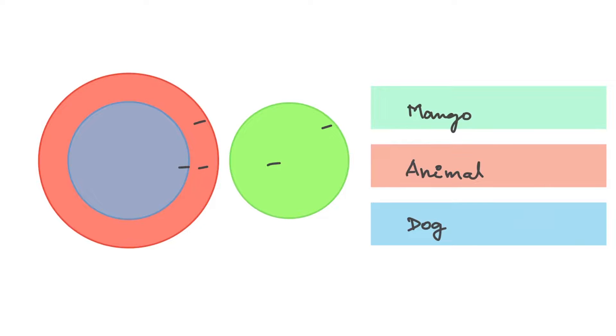Now let's get into the questions. Here is a question. They are saying vegetables, potatoes and cabbage. Once we read this, we are very clear. Potato is actually a vegetable. Even cabbage is a vegetable. And between these two, there is no intersection. So the best option here is B. Where this is vegetable. This could be potato. And this could be cabbage. Let's try one more.